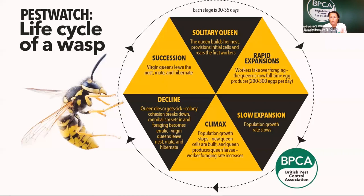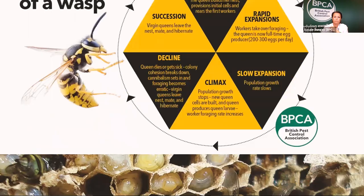The queen will start laying queen eggs and also drone - male - eggs. At the end of that cycle the workers leave because they don't have a nest or queen to protect. Those workers become more foraging, which is why in autumn we have more problems around picnic areas when eating outside. Eventually the queen dies, new queens are fertilized by the males, they look for a hibernation spot, and the cycle starts again. The following year may have more nests if new queens have successfully overwintered in that area.